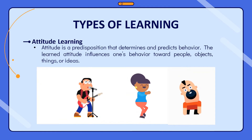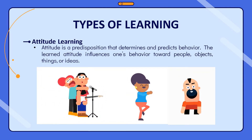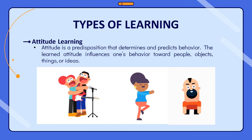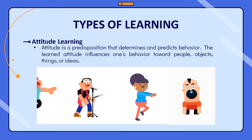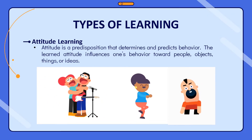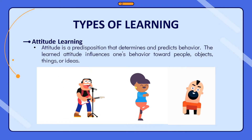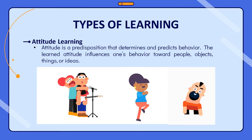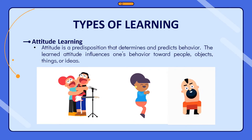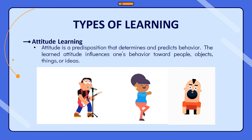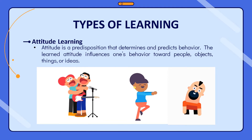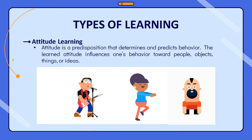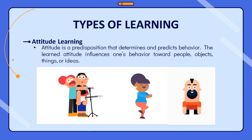Attitude learning is a predisposition which determines and predicts behavior. Our learned attitudes influence one's behaviors toward people, objects, things, or ideas. In life, we develop different viewpoints from our childhood up until now. The behavior may be positive or negative depending upon our attitudes. As future educators, our attitude toward co-teachers, students, and parents is very important, for we must build relationships to understand one another.